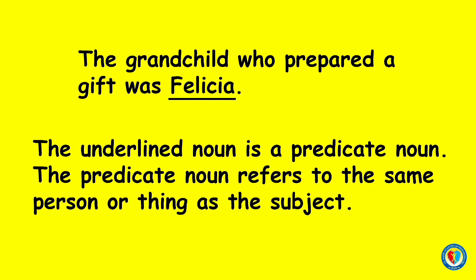Number 2. The grandchild who prepared a gift was Felicia. For the second example, the underlined noun is a predicate noun. The predicate noun refers to the same person or thing as the subject.